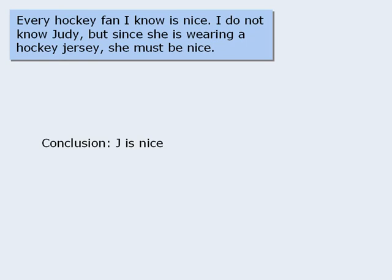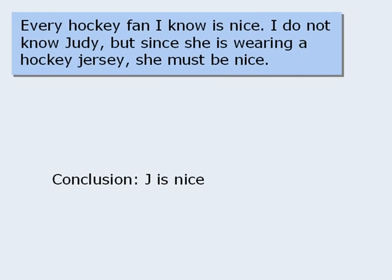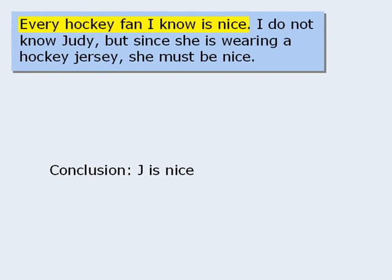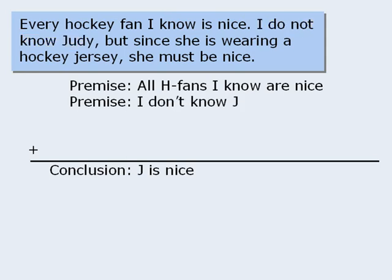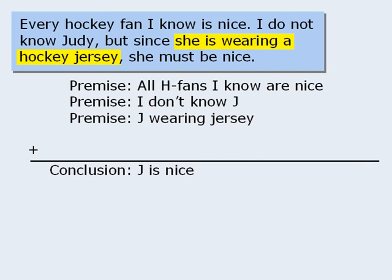Now that we've identified the conclusion, what evidence does the author use to support it? These will be the premises. One premise is: every hockey fan I know is nice. We might summarize this as follows. Another premise is: I do not know Judy. We might summarize this as follows. The last premise tells us that Judy is wearing a hockey jersey, which we might summarize like this.